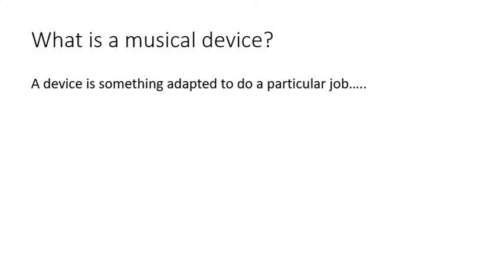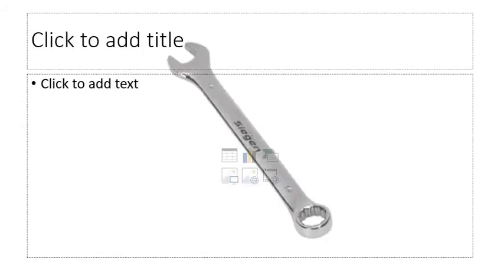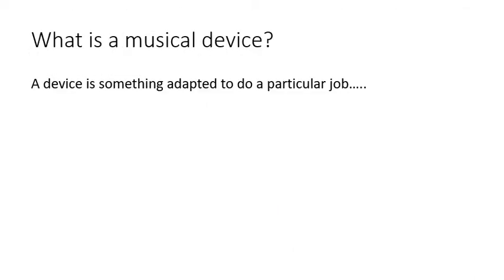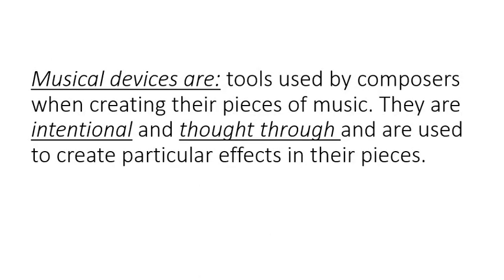So what is a musical device? Well, a device — even outside of musical terms — is something adapted to do a particular job. For example, a spanner is a device whose particular role has been adapted to tighten and loosen bolts. That's why it's the shape it is; it's been very carefully thought through. So a musical device is a tool used by composers when creating their pieces of music — intentional, thought through, and used to create particular effects.